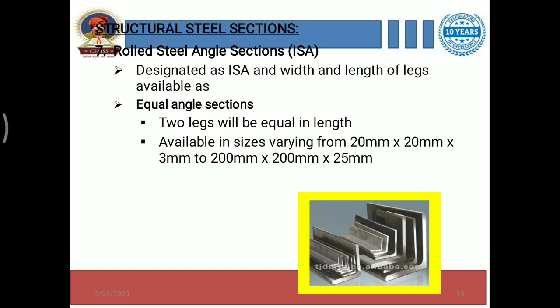The third dimension in these sizes is the thickness. In the diagram, you can clearly see the length and width of these angles. For each particular angle, the length and width remain the same, while the thickness is variable — ranging from 3 mm up to 25 mm — and the length and width vary from 20 mm to 200 mm. That is why these are the ranges given for equal angle sections.